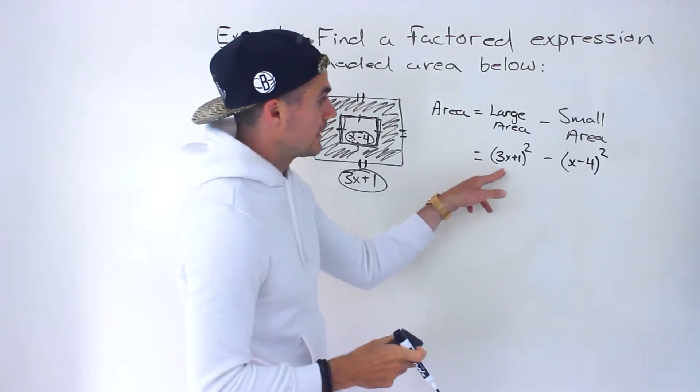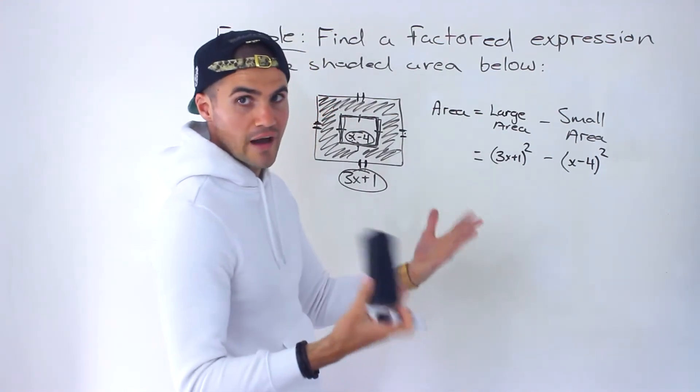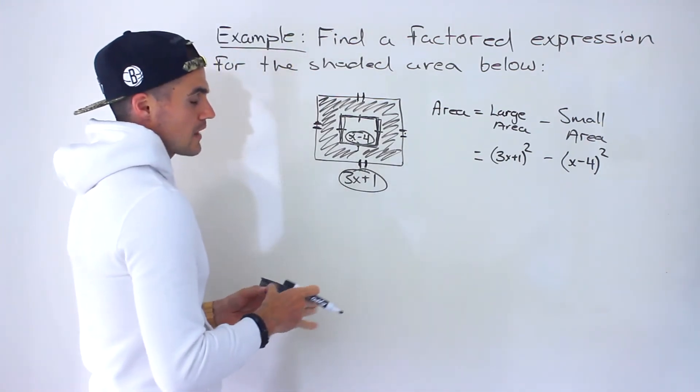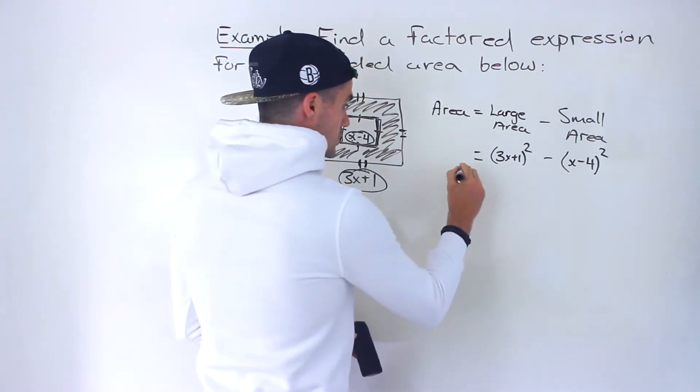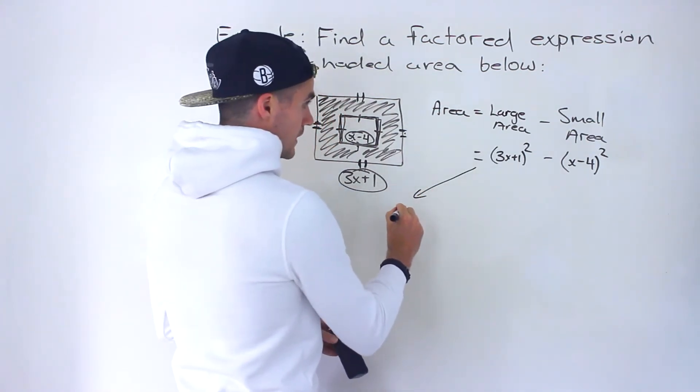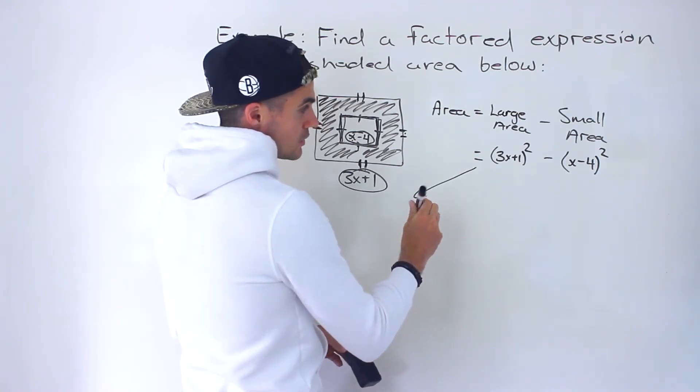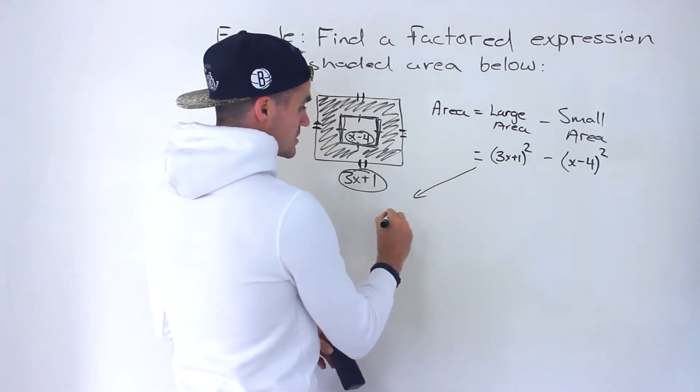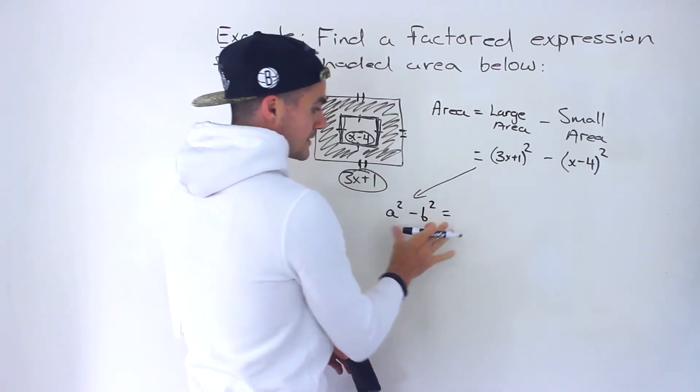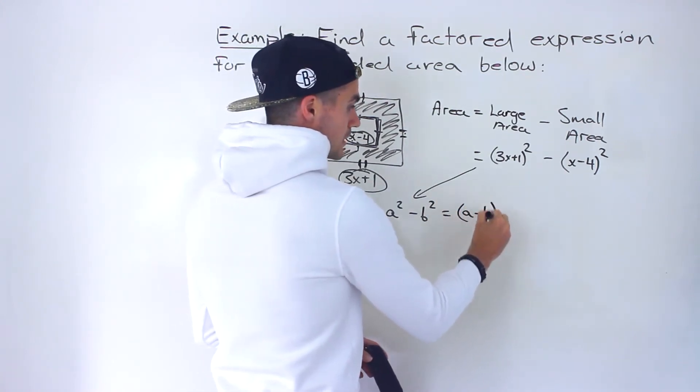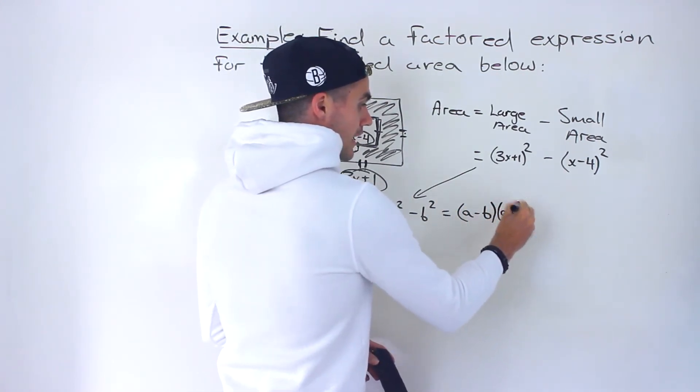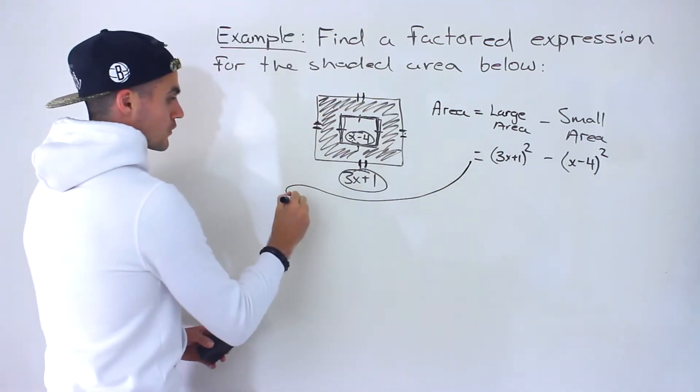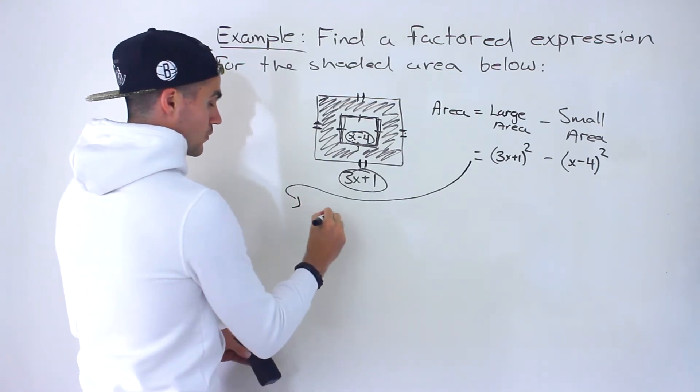We can't leave it like this. This has to be fully factored. There's actually two different ways to do it. Method one is to recognize that you're dealing with a difference of squares here. Remember, a difference of squares is a² - b² = (a-b)(a+b).